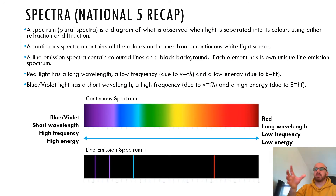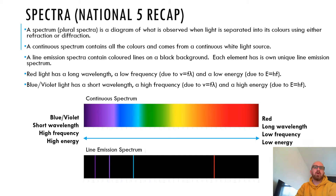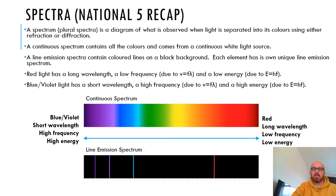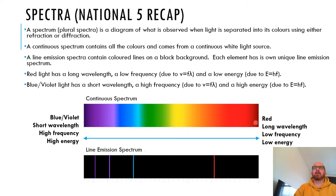We're now going to move on and think about the photon — it's a little packet of energy, not just light but could be any EM wave. We'll do some revision of spectra and introduce a new type. A spectrum — plural spectra — is a diagram of what is observed when light is separated into its colours using either refraction or diffraction. A continuous spectrum contains all the colours and comes from a continuous white light source.